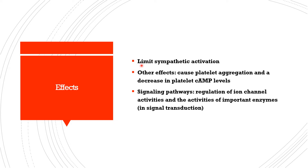The primary effect of alpha-2 receptors is to limit sympathetic activation. During sympathetic activation, norepinephrine is released, and the alpha-2 receptors found at the presynaptic terminals are activated, resulting in decreased norepinephrine release.